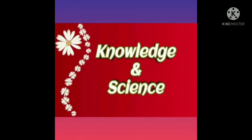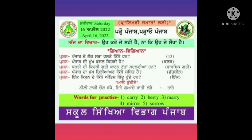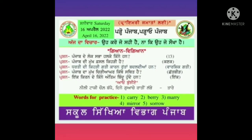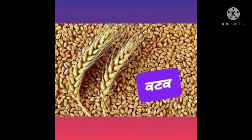Knowledge and Science. Our first question is: How many Lok Sabha constituencies are there in Punjab? Punjab ਦੇ Lok Sabha ਹਲਕੇ ਕਿੰਨੇ ਹਨ? The answer is 13 ਹਲਕੇ। Second question: Which is the major crop of Punjab? Punjab ਦੀ ਮੁੱਖ ਫਸਲ ਕਿਹੜੀ ਹੈ?